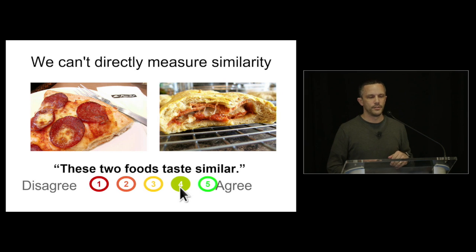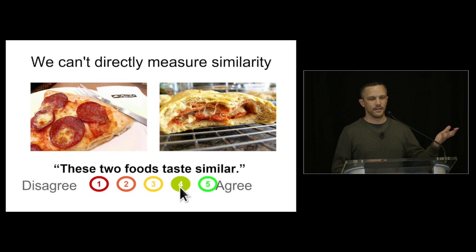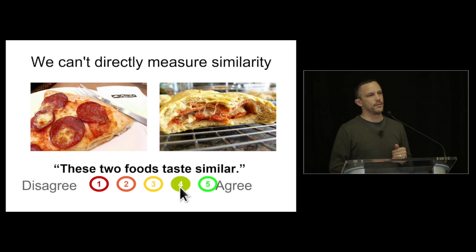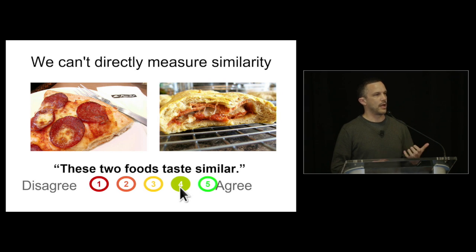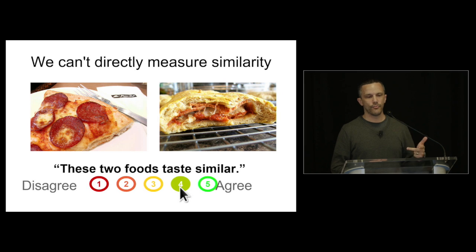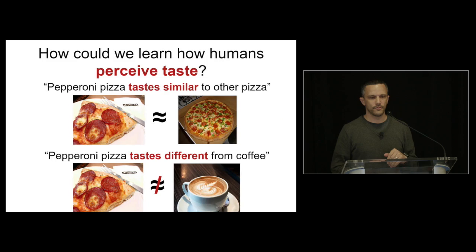We found triplets preferable to a Likert scale. If you present pairs of images and ask 'these two foods taste similar — how much do you agree?' on a five-point scale, how are respondents calibrated? Will it drift as you show more images? That kind of absolute numerical scale is challenging — anyone working with recommendation systems like Netflix runs into this problem. So we sidestep it completely and use triplets instead.